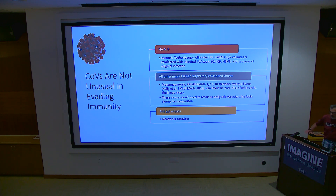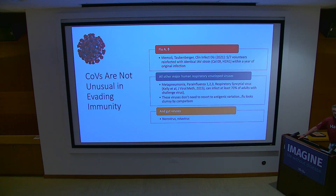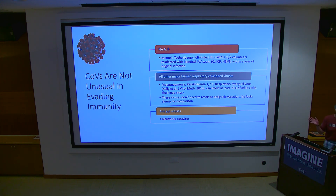Jeff Taubenberger at NIH has an influenza challenge model. He can take people, infect them with flu, have them come back a year later, reinfect them with the exact same batch of virus — sometimes with the exact same symptoms. You can measure their antibodies; from what's in the literature, a titer greater than 1:40 should have protected them. But they weren't protected.